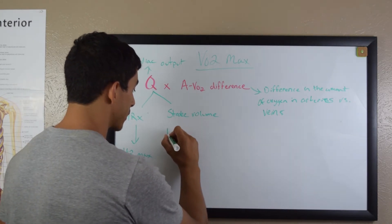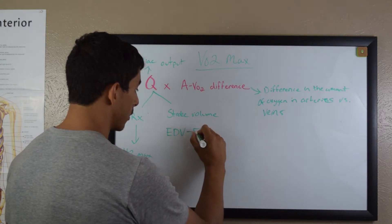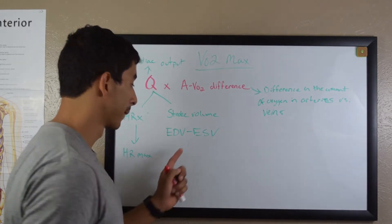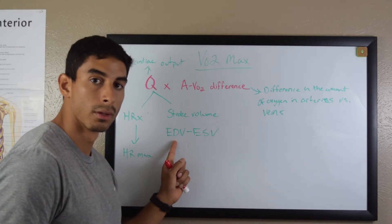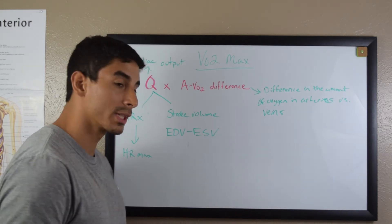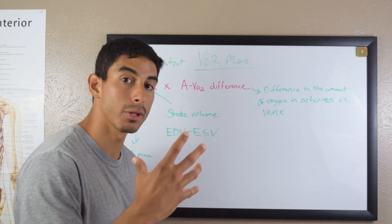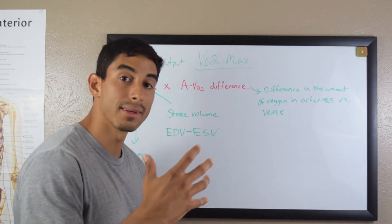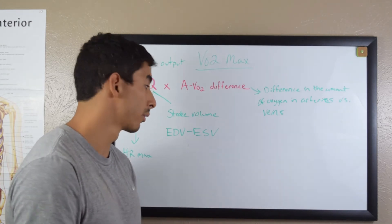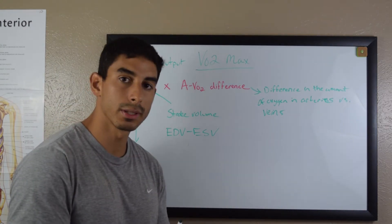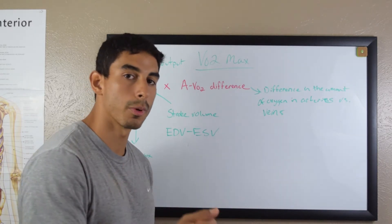Stroke volume is calculated by looking at end diastolic volume minus end systolic volume. What this means is the amount of blood that's in the heart, end diastolic volume is the amount of blood that's in the heart at the end of the diastolic phase of contraction when the heart fills up with blood minus the amount of blood that's left in the heart after the systolic phase of contraction when the heart pumps all the blood out.